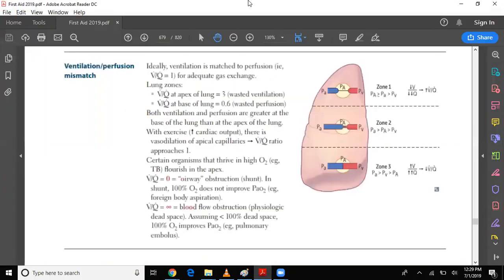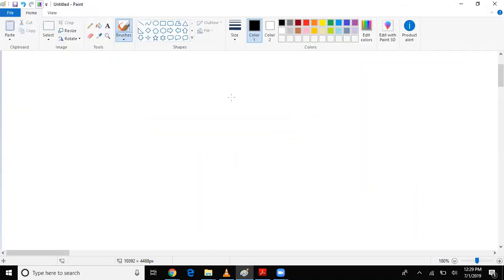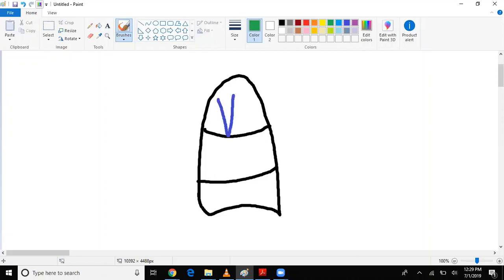Alright, so we're going to get into VQ mismatch. This is how I would like for you to see it. We have the lung—let's divide it into three sections. Now, up top in the apex of the lung, we have significantly more ventilation than we do perfusion. In the middle...